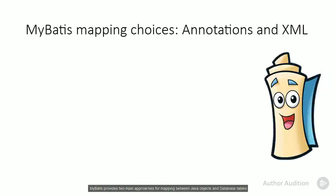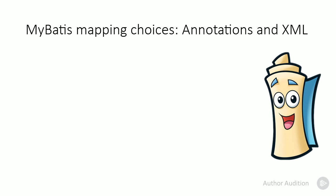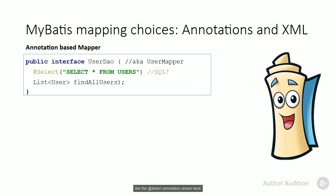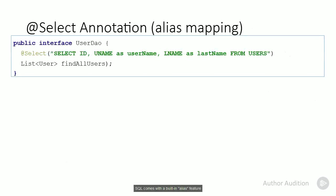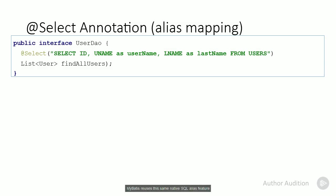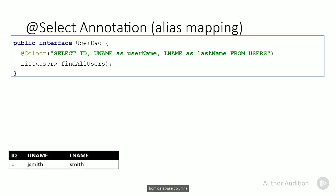MyBatis provides two main approaches for mapping between Java objects and database tables. For mapping relatively simple tables and queries, I typically use the annotation option, like the @Select annotation shown here. SQL comes with a built-in alias feature that can map the column name to any label you want. MyBatis piggybacks off this feature to provide the ORM mapping. For example, in the SQL shown, the database column 'uname' has an alias 'username'. MyBatis reuses this native SQL alias feature to perform the mapping from database columns to fields in Java objects.